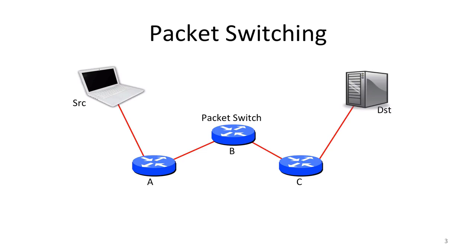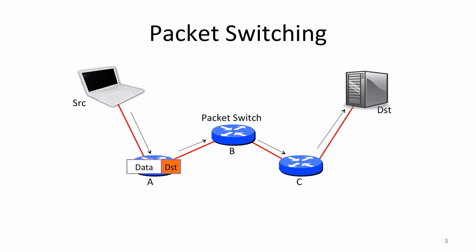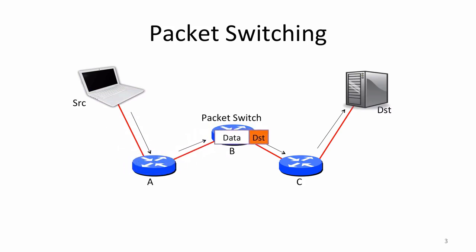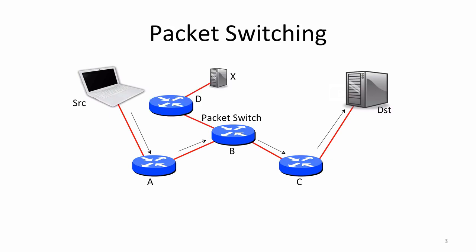Let's say we have a source and a destination, and a network of packet switches A, B, and C between them. When A receives a packet for the destination, it sends it along the link to B. When B receives a packet for the destination, it sends it along to C. And when C receives a packet for the destination, it sends it to the destination directly. In the simplest form of packet switching, each packet is routed separately and independently.